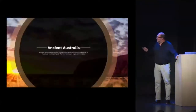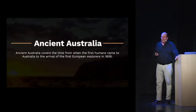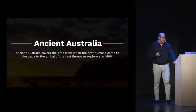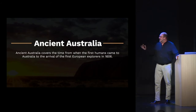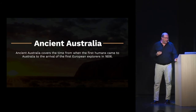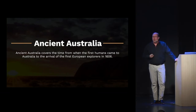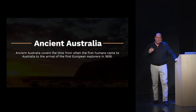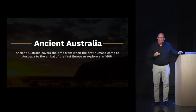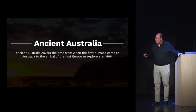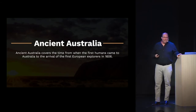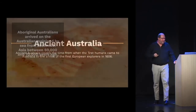Now we're going to talk about the period of ancient Australia. This is the period that describes the time from when humans first arrived in Australia to the time of the first European explorers — a period of about 55,000 to 70,000 years ago until relatively modern times in 1606.